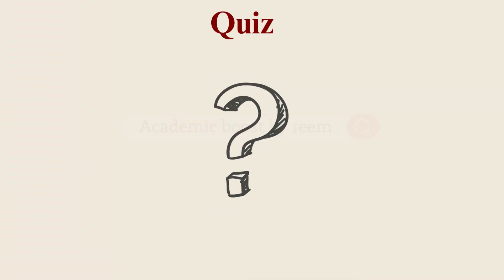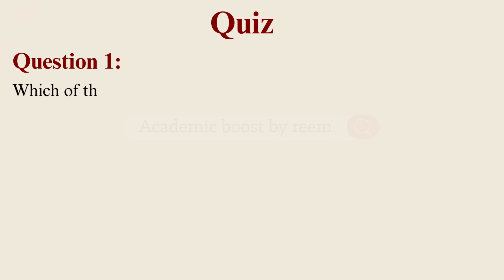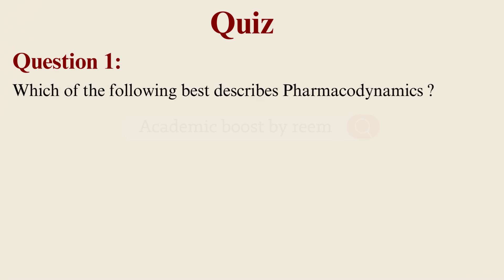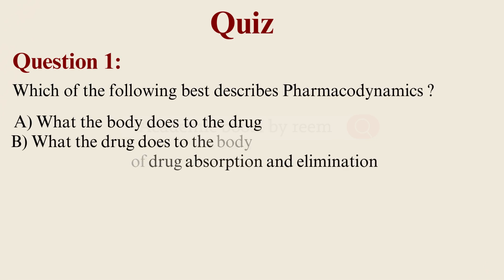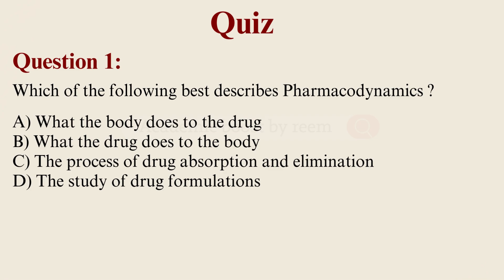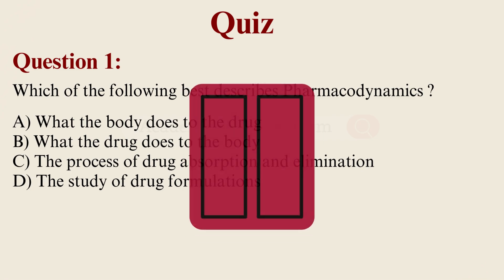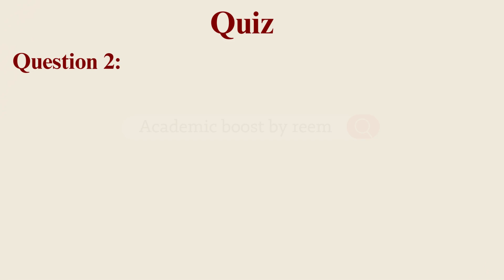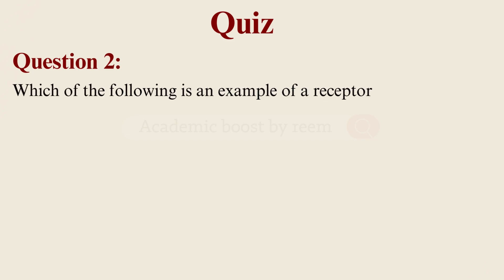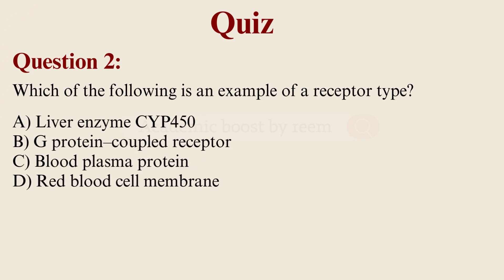Now that we've covered the basics, let's see how much actually clicked. Here's a quick quiz to test your understanding. Question number one: which of the following best describes pharmacodynamics? A, B, C, or D. Question number two: which of the following is an example of a receptor type? A, B, C, or D.